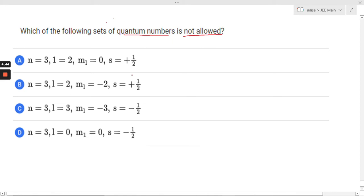For the first option, n equals 3, so l may be 0, 1, or 2. For the second option, n equals 3 again, so l is going to be 0, 1, and 2.